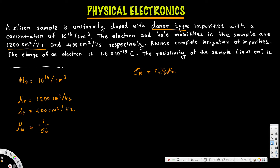Here, nn is the electron concentration in n-type and pn is the hole concentration in n-type. In an n-type semiconductor, the majority carriers are electrons, and the hole contribution is comparatively very small, so we can approximate: sigma n is approximately equal to nn times q times mu n.